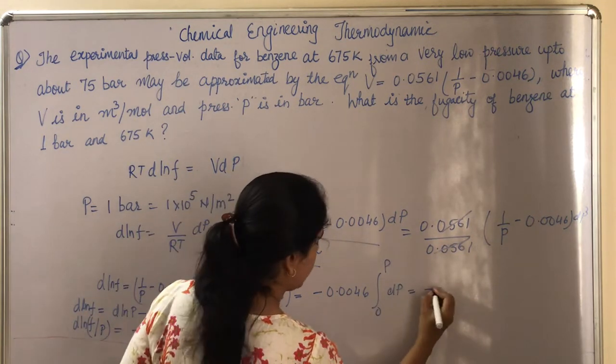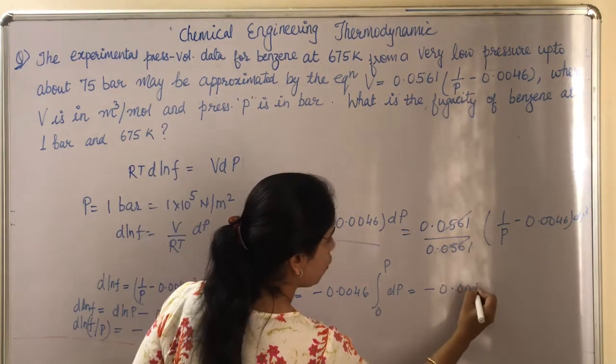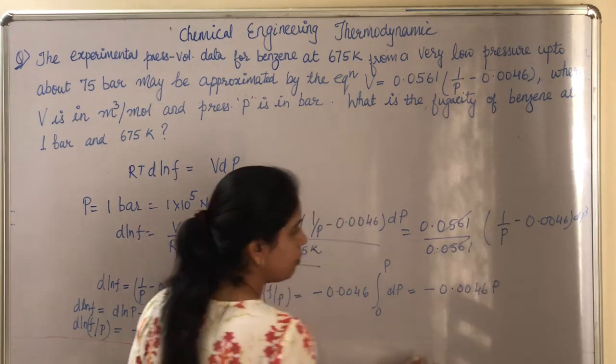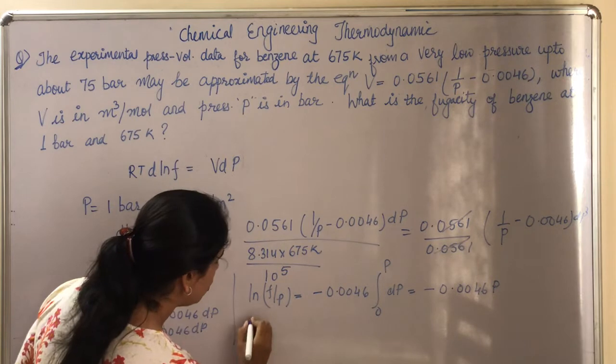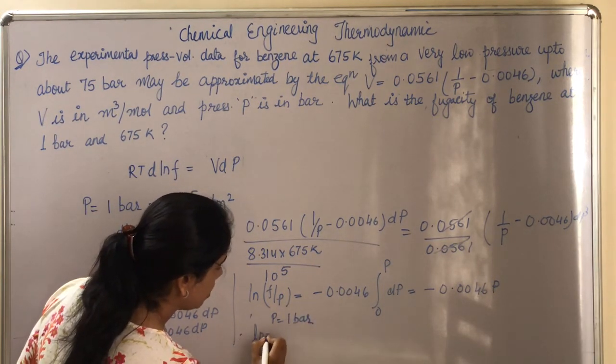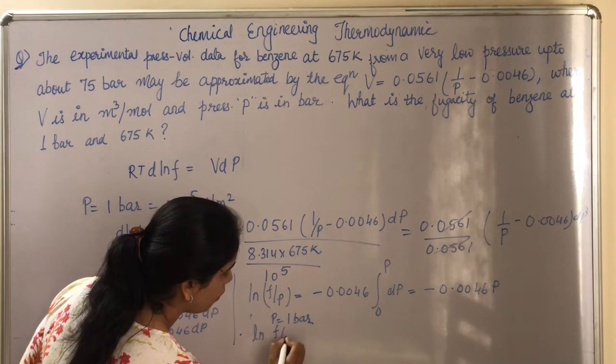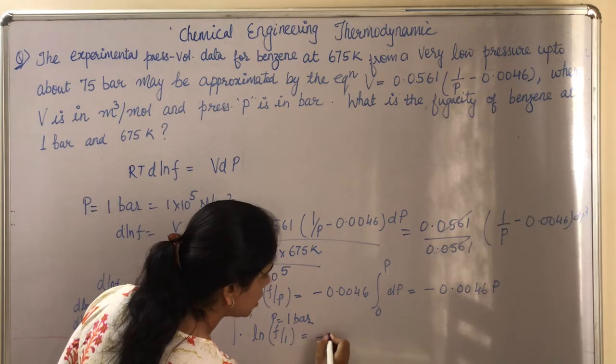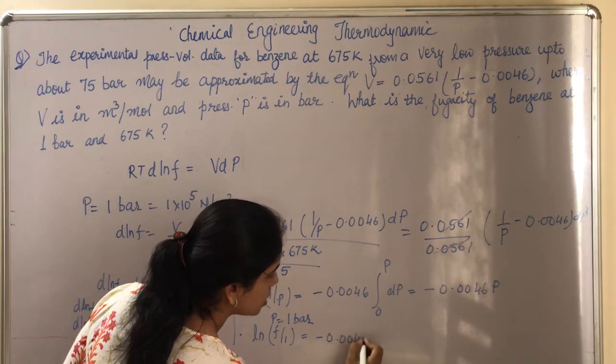And P is what we need to find out at 1 bar, so the value of P is 1 bar. So ln(f/1) = -0.0046 × 1.